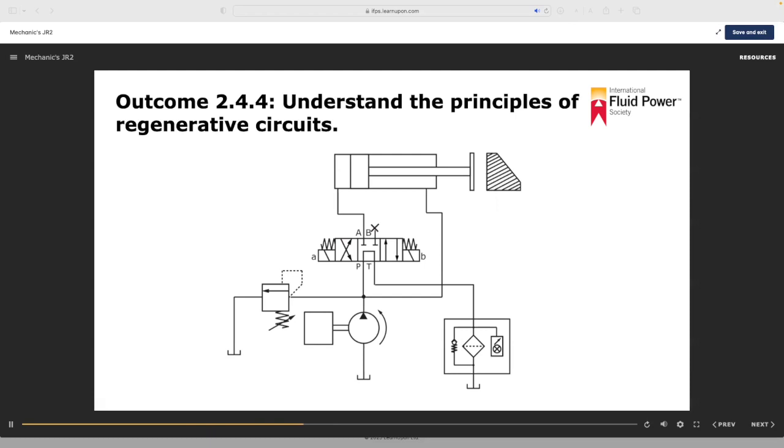Because of the differential area between the blind end and the rod end, the equal pressure produces a greater force on the blind end, causing the cylinder to extend.